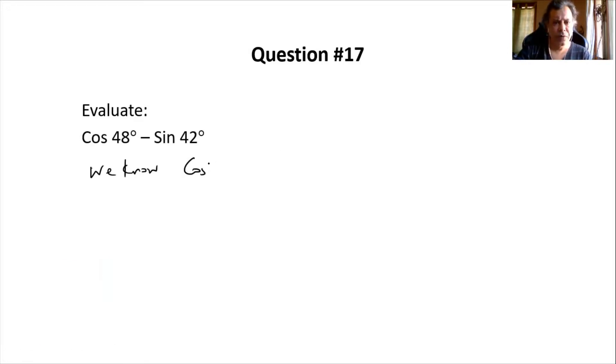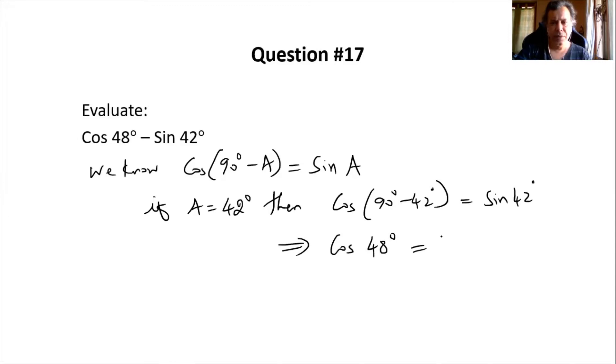We know cos of 90 degrees minus A is equal to sin A. So if we substitute, if A is equal to 42 degrees, then cos of 90 degrees minus 42 degrees should be equal to sin 42 degrees, or cos 48 degrees should be equal to sin 42 degrees.